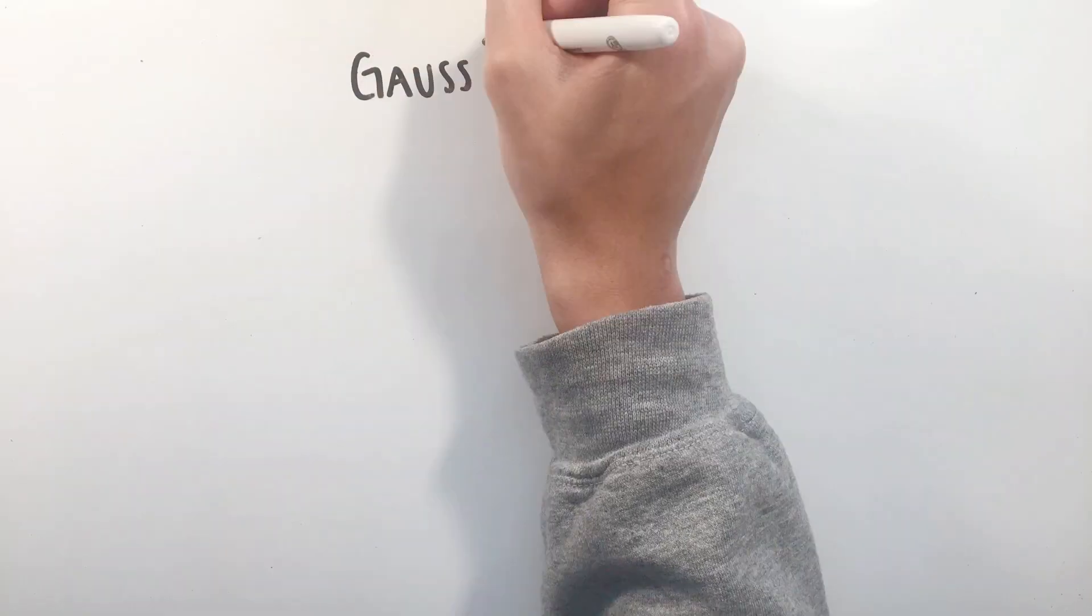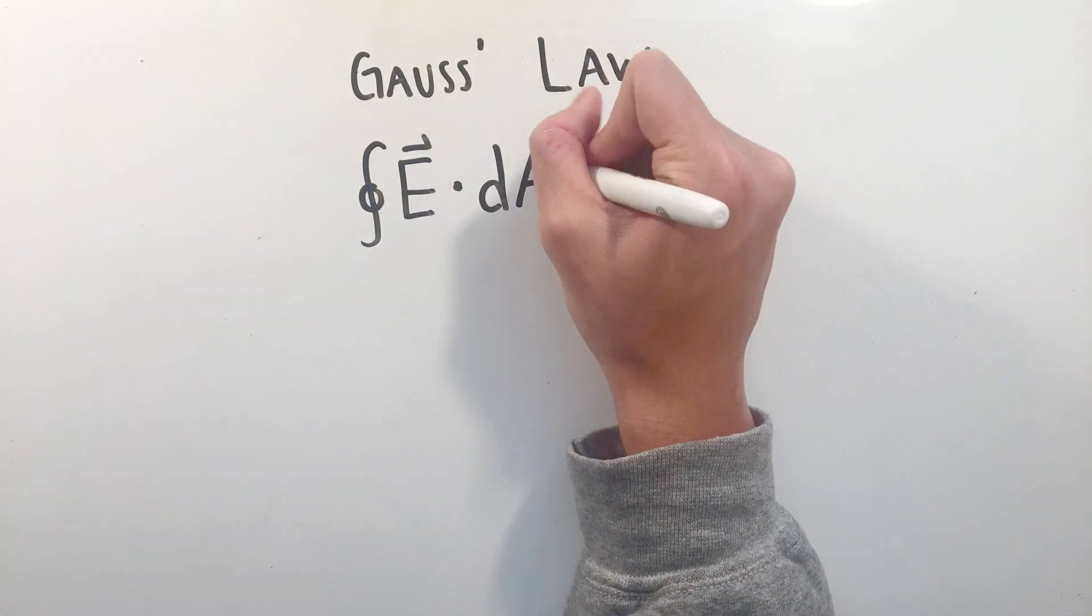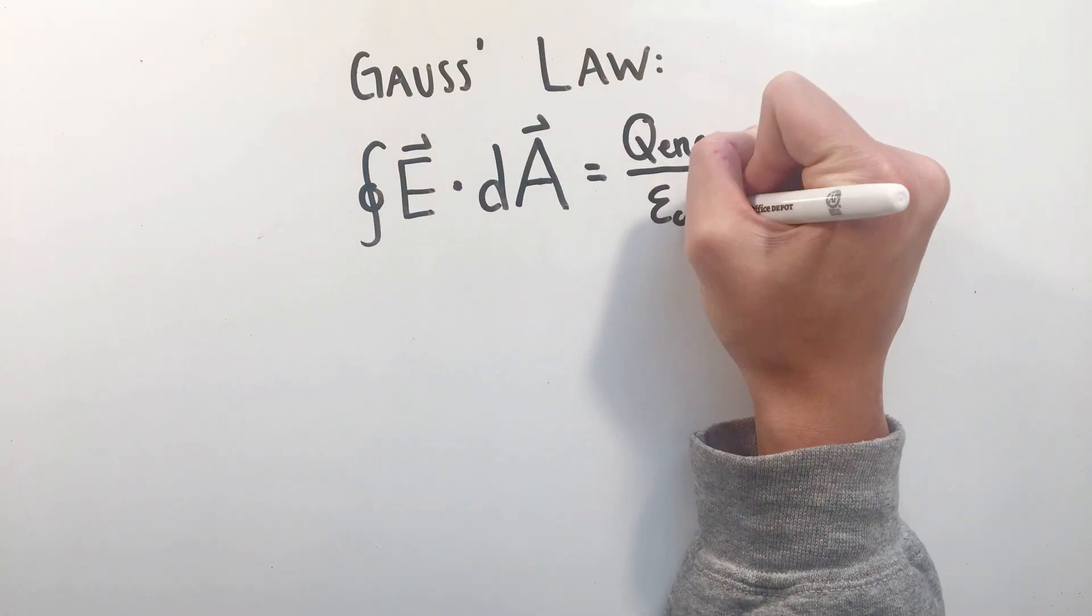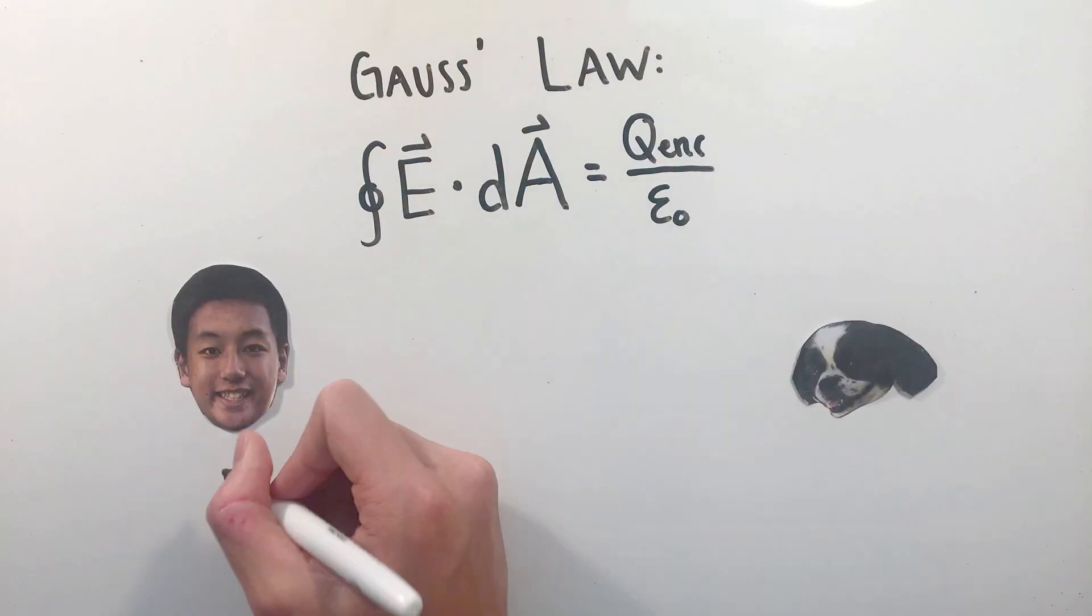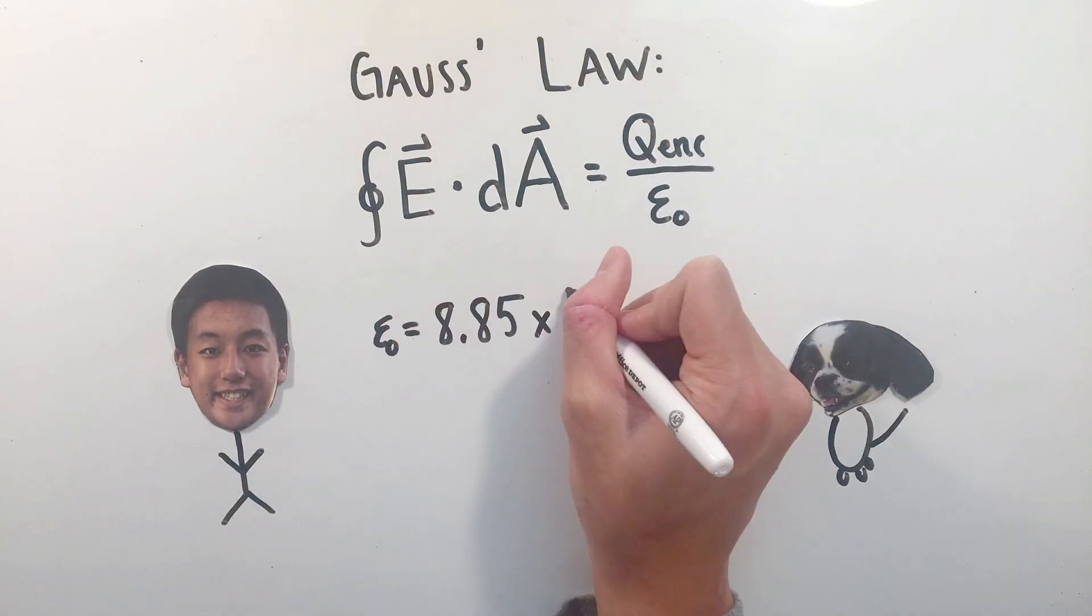This concept of electric flux leads us to Gauss's law, that the electric flux over a closed surface equals the charge enclosed by that surface divided by a constant known as the permittivity of free space.